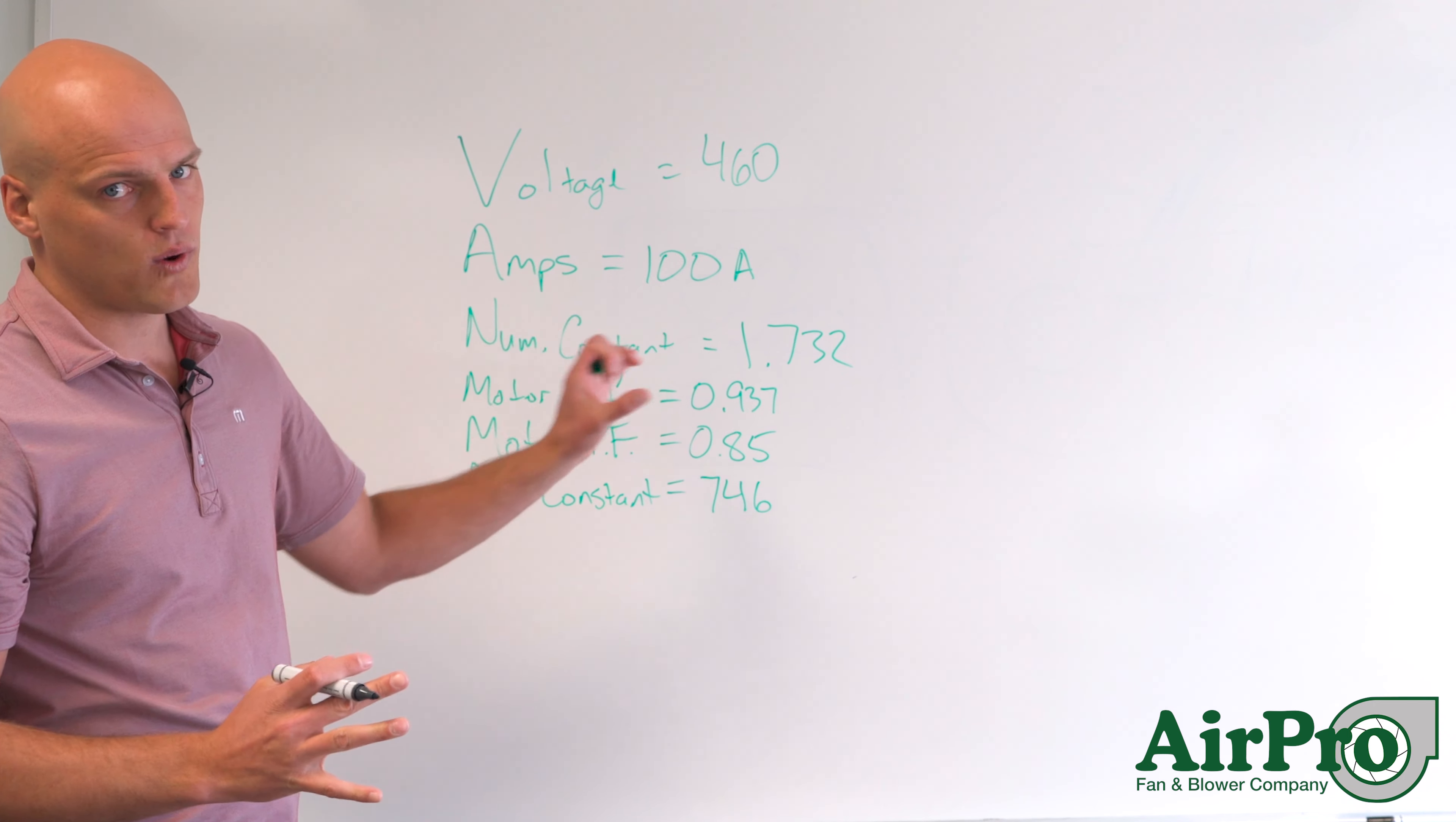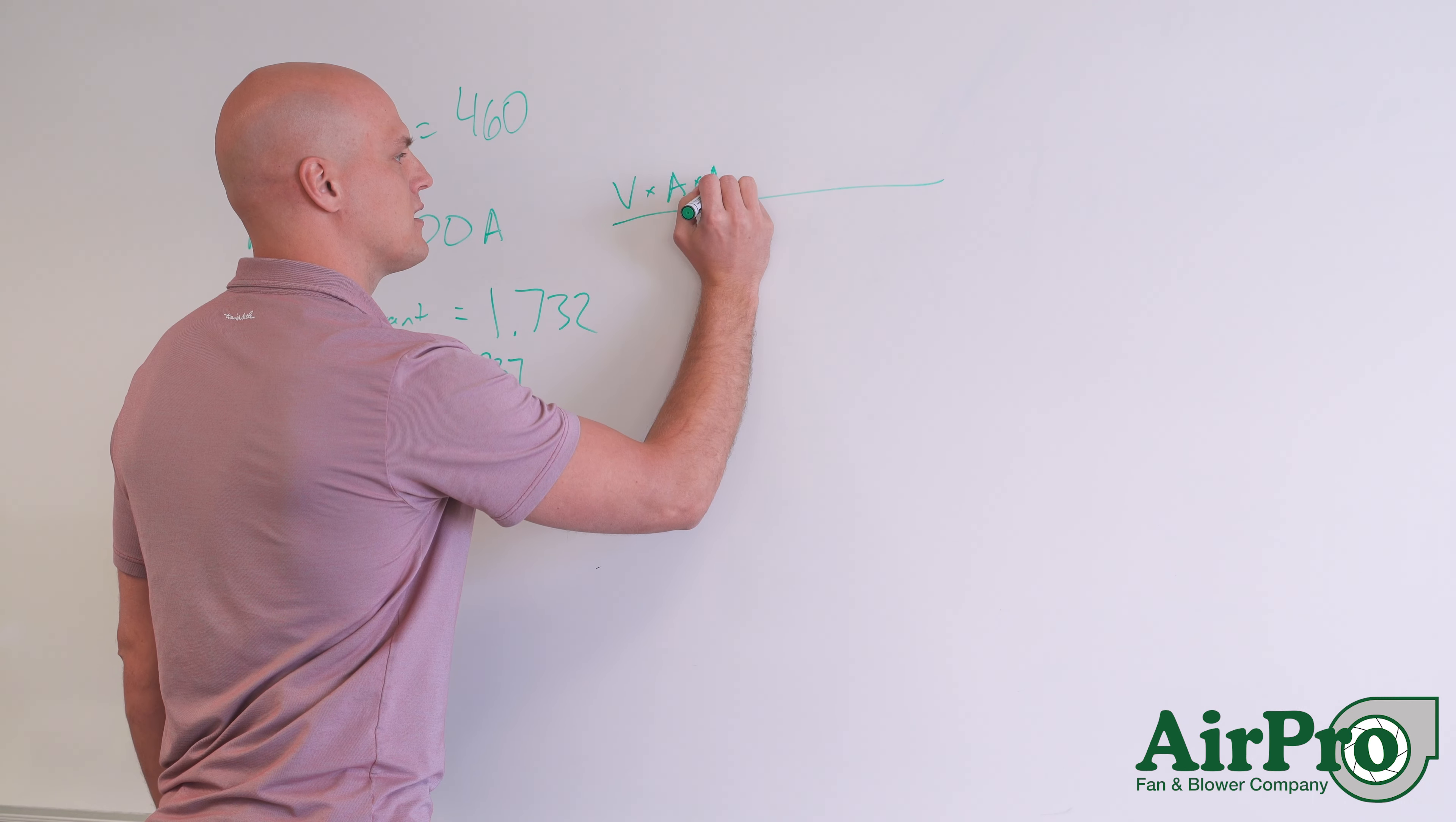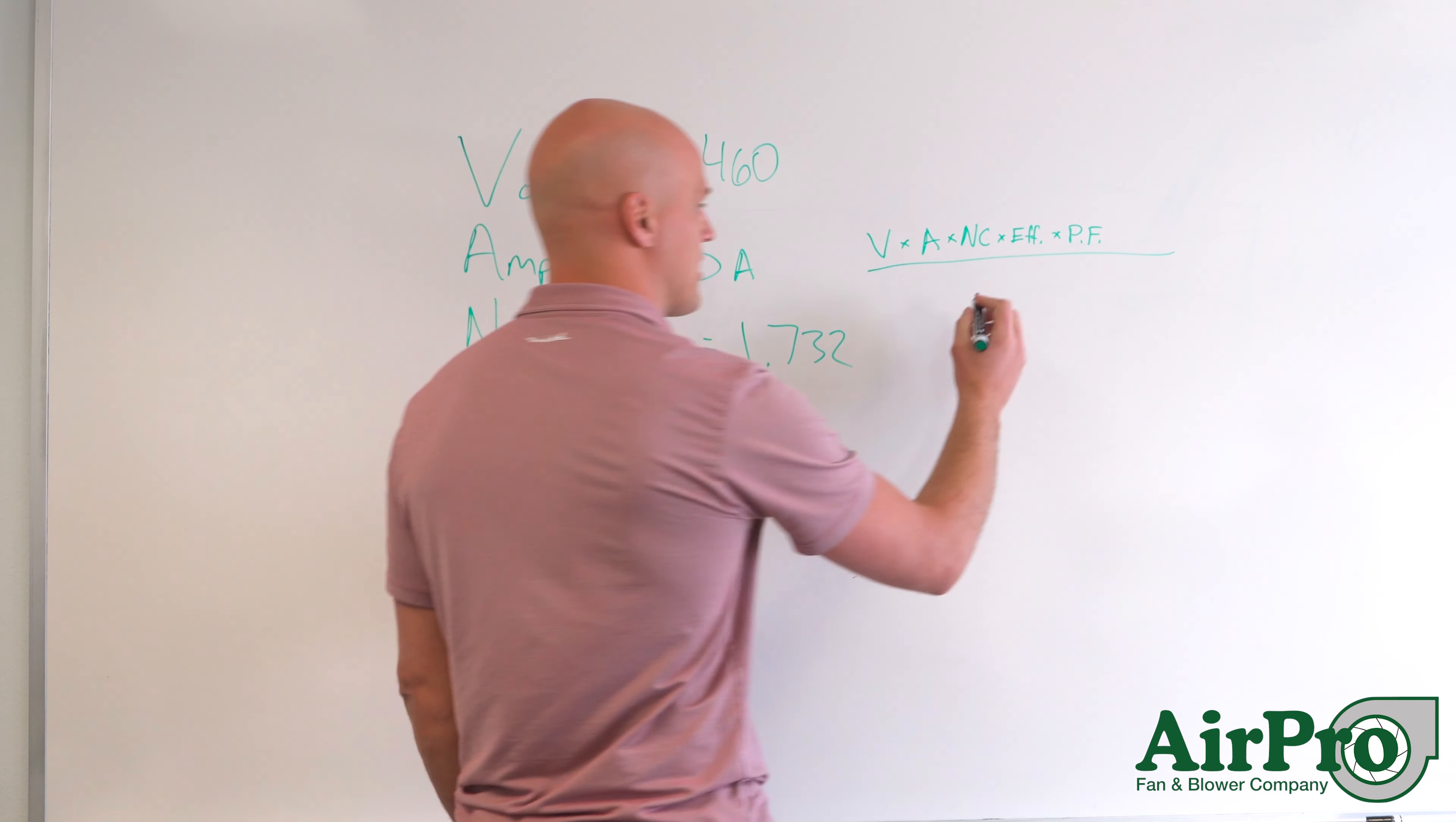So now let's put this equation together. We've got a numerator and a denominator. Up in the numerator, we have voltage times amps times the numerator constant times efficiency times power factor. In the denominator, we have the denominator constant.